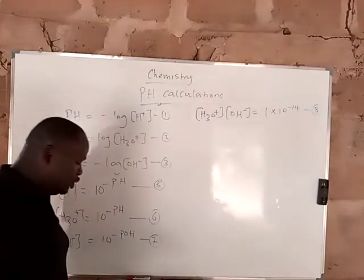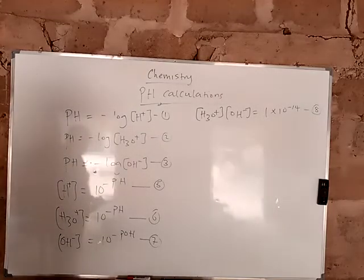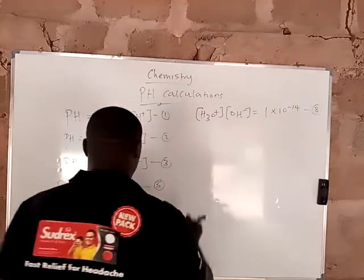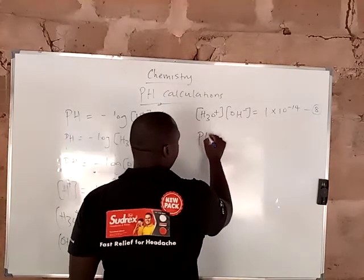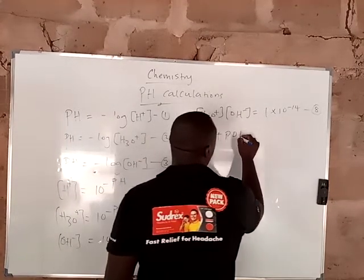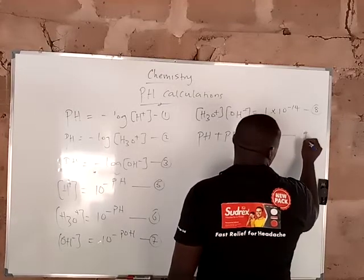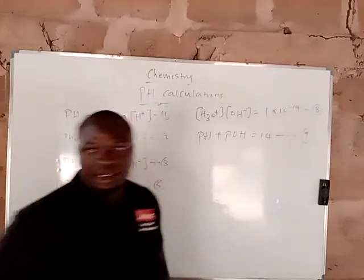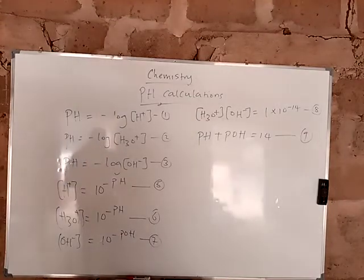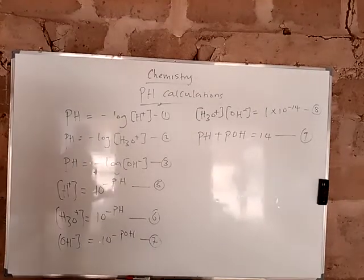There's something you should know. Please endeavor to write this on your note very fast. pH plus pOH is equal to 14. This is equation 9. Endeavor to write this on your note immediately.